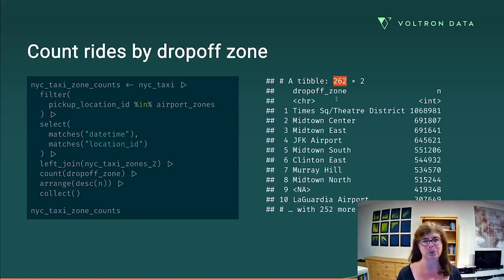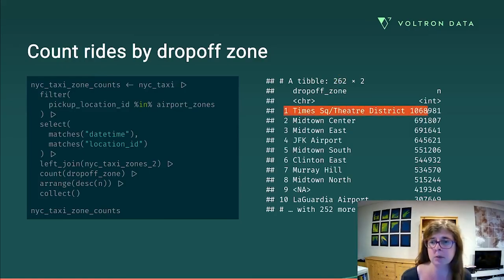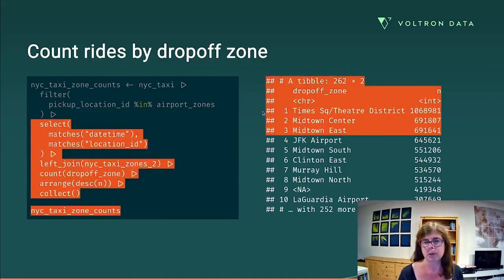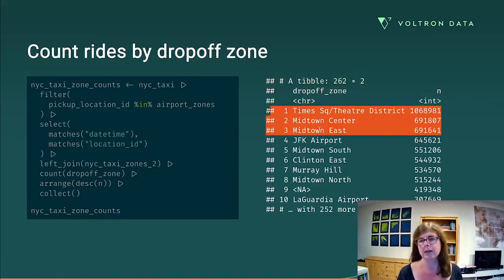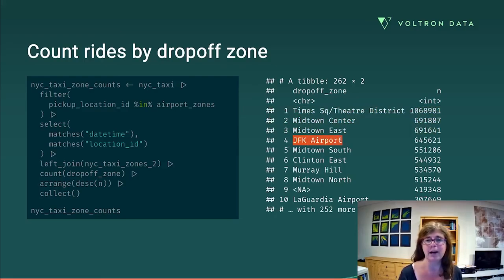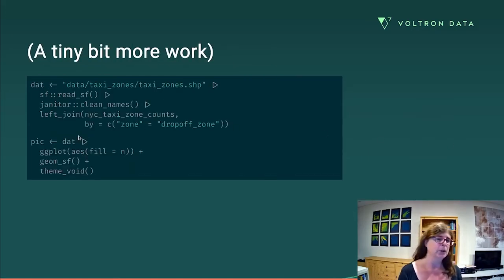And that has the nice result that only 262 rows come back into R, which is nice and small and simple. We can see that the most common destination is Times Square, the theater district. It's not super surprising. You can see that essentially, midtown Manhattan is where people mostly go, but there's a lot of things where you end up at other airports. So airport transfers are actually some of the most common taxi rides that you get from New York City airports.